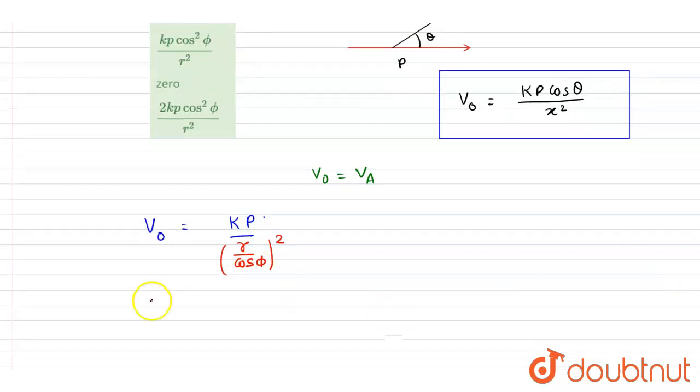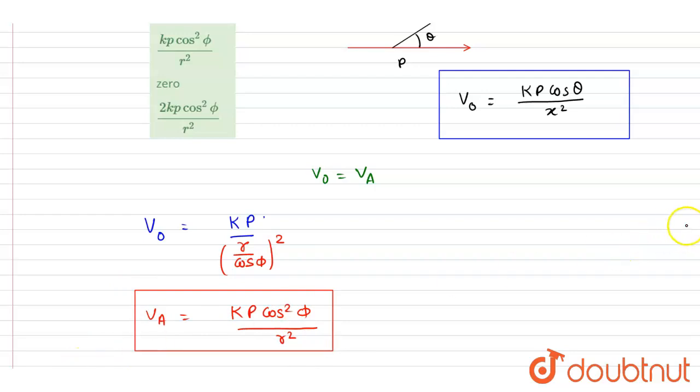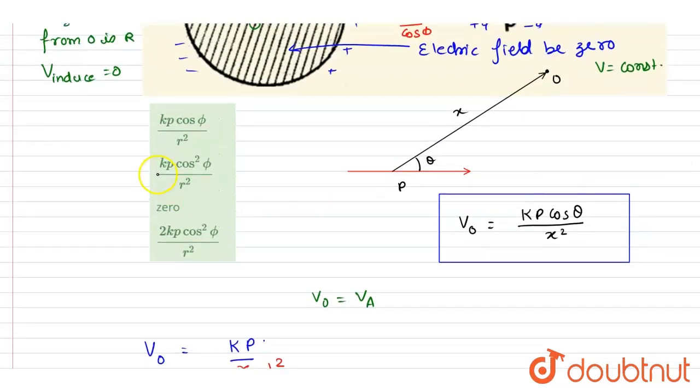So see what we got. We got the potential at O is this, and that will be same as that of the potential at A. So we'll write down the potential at A. It is cos square phi by r square, and this is the answer of this question. Now check for the option, kp cos square phi by r square. B is the correct. Thank you.